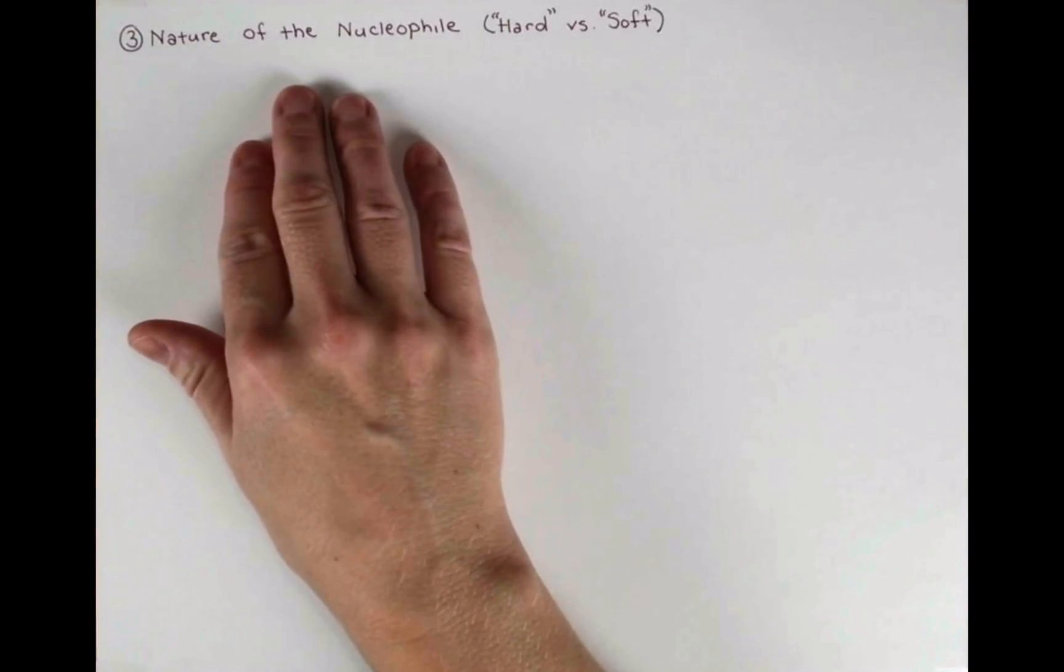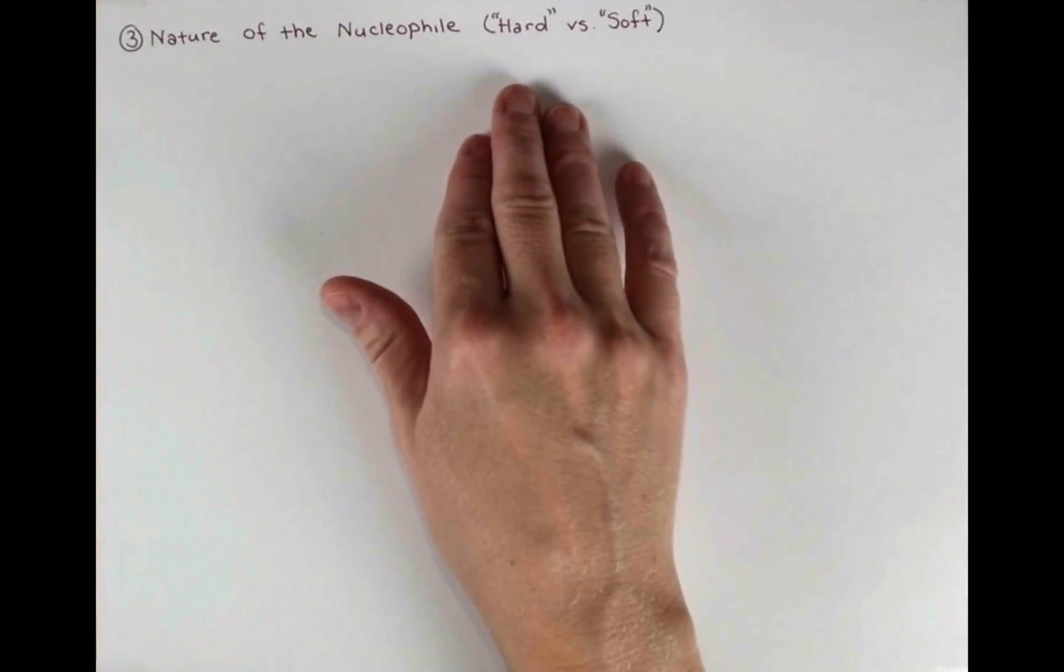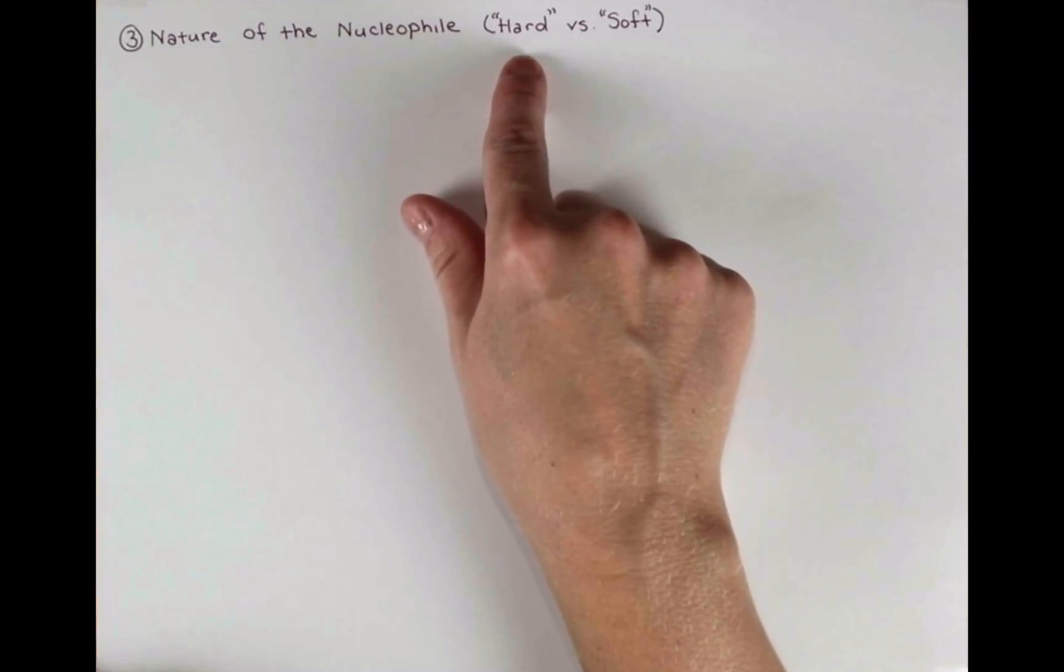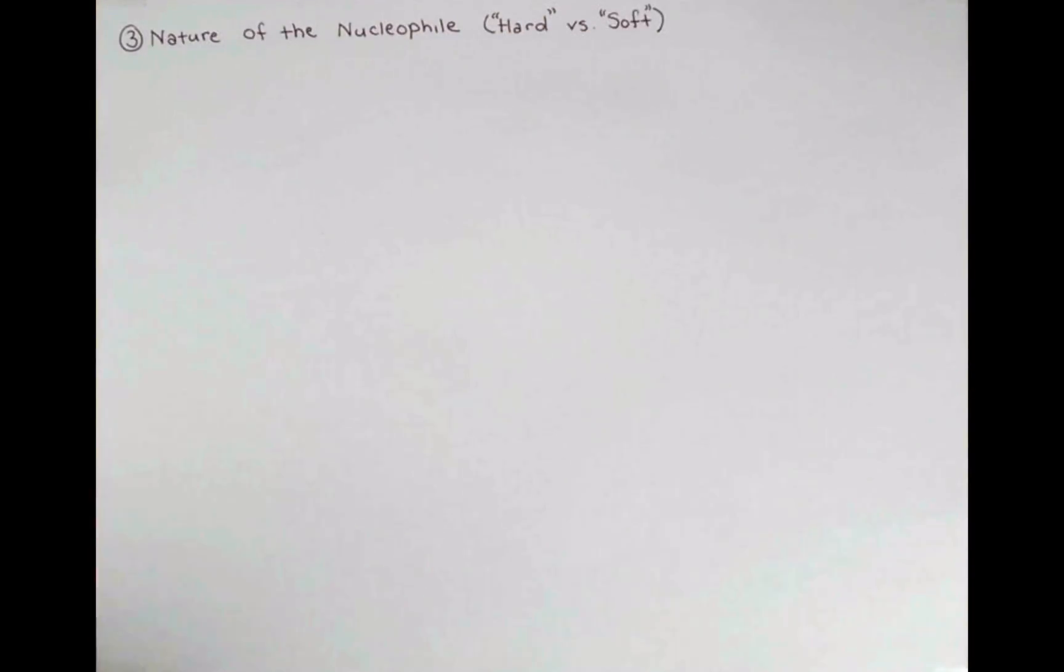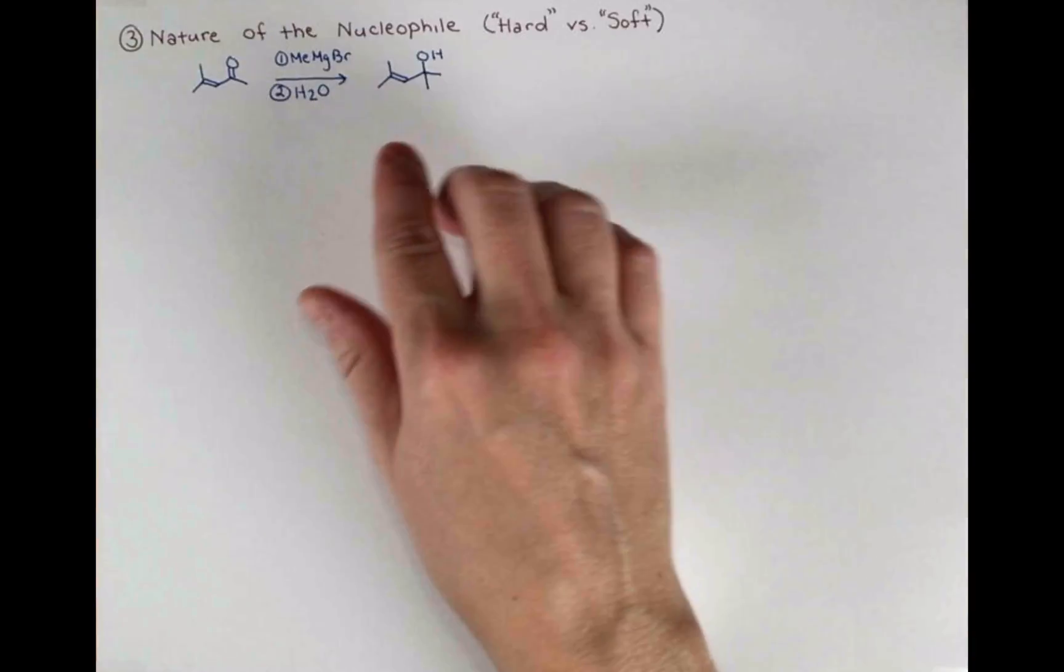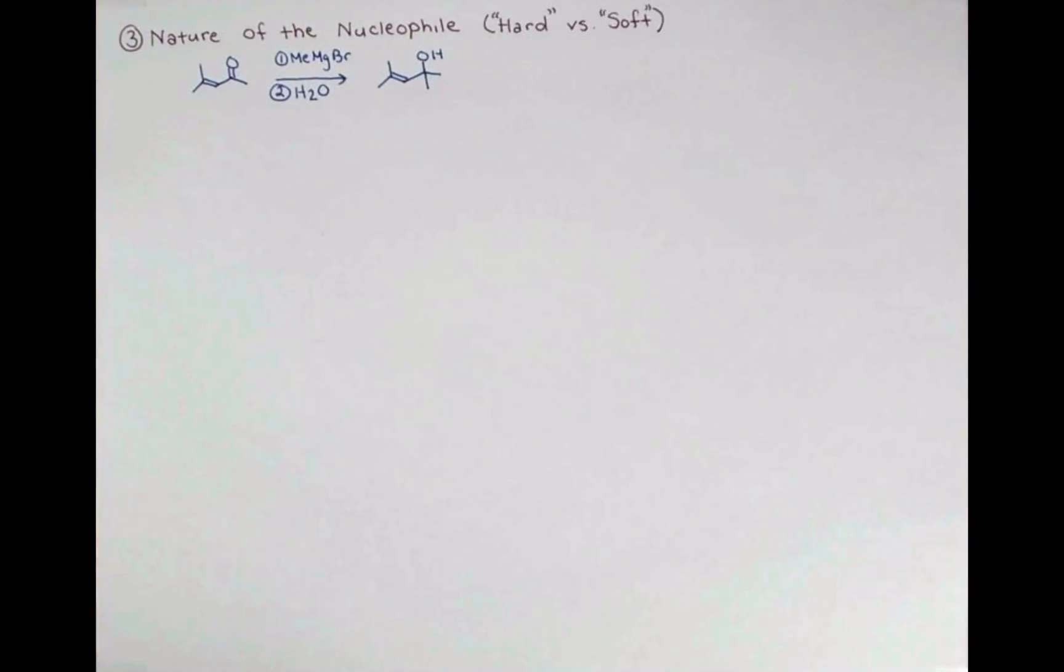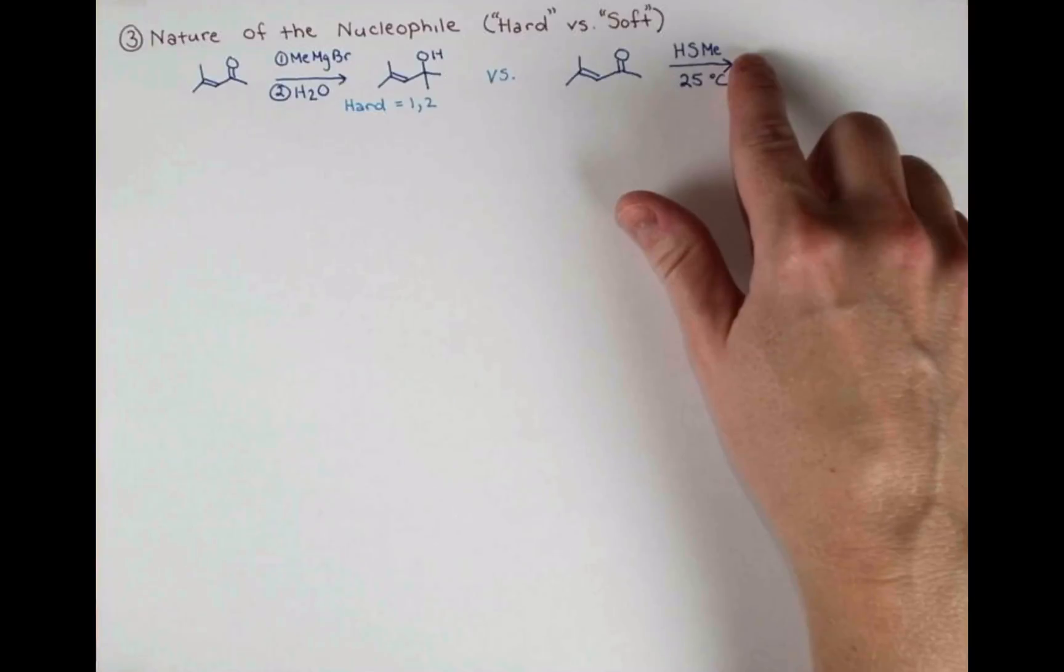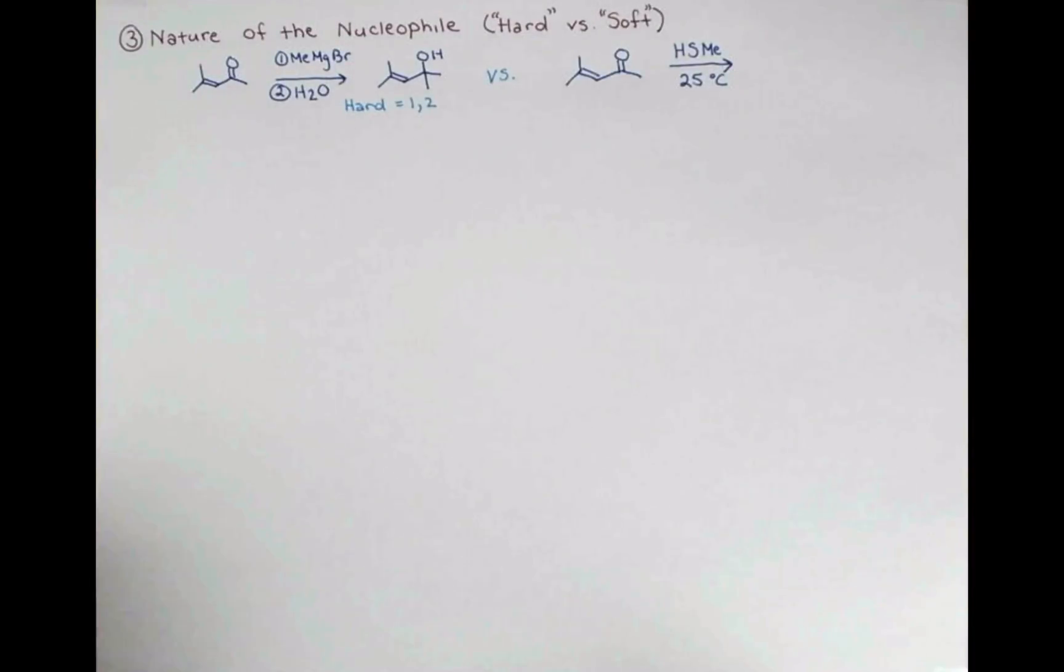The final factor that influences the outcome of the reaction is the nature of the nucleophile, and some nucleophiles are considered hard and some are considered soft. So let's take a look at some examples and see what's going on and what these terms even mean. Grignards are considered hard nucleophiles and prefer to add 1-2 unless the substrate structure as we've seen prevents that. When the same enone is treated with this sulfur nucleophile at room temperature, we see 1-4 addition. Let's look at examples of some of these nucleophiles and talk about why a hard nucleophile would prefer 1-2 addition and a soft nucleophile would prefer 1-4.